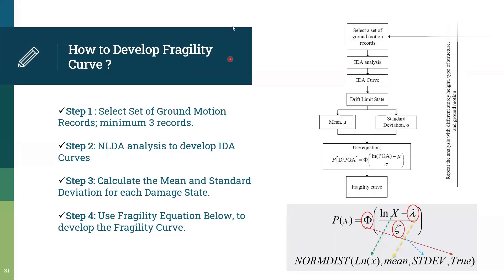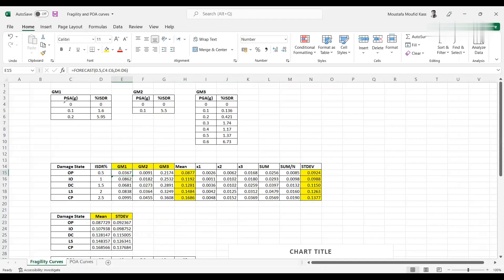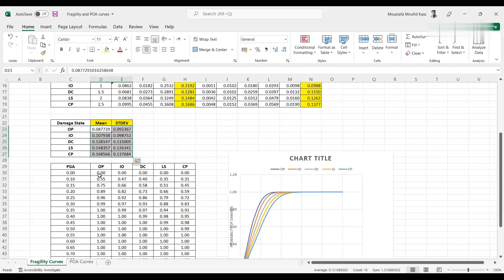Here we can see the ground motion one, two, three, extracted from the IDA curve for each ground motion. An interpolation happened here between the inter-story drift and the PGA. We calculate the mean and the standard deviation for each damage state. Then we apply the normal distribution function for each damage state to develop the fragility curve. Mean, standard deviation, and the cumulative distribution function to develop the fragility curve for the five states: OP, IO, DC, LS, and CP.